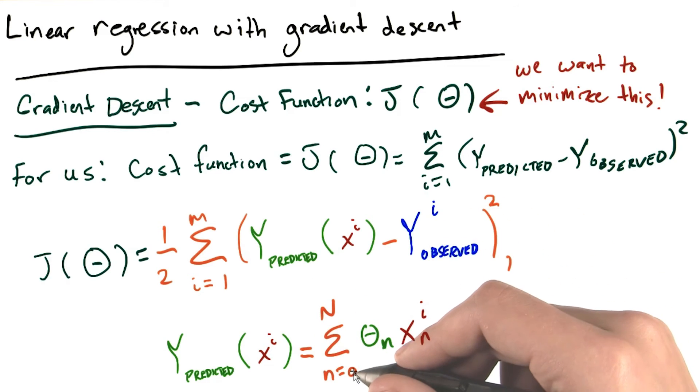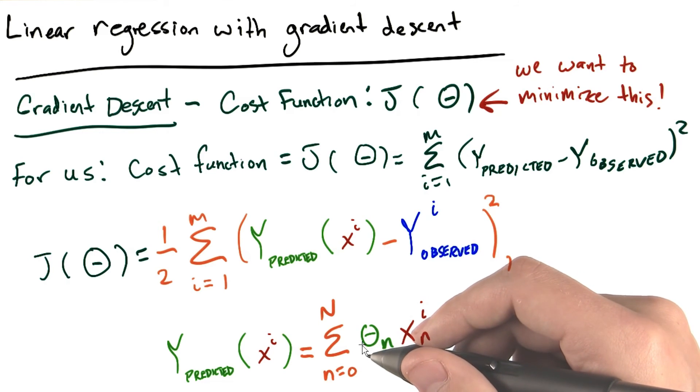Note that we include an n equals 0 term here, which corresponds to a constant term in our model, which doesn't correspond to any of the input variables.